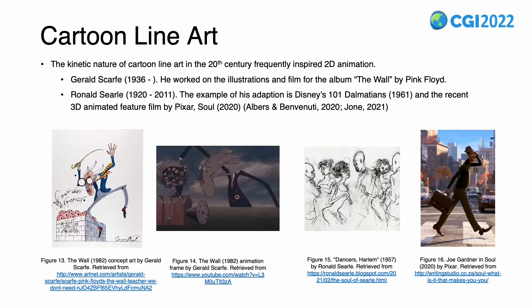The kinetic nature of cartoon line art in the 20th century has inspired many 2D animations. Two examples are Gerald Scarfe and Ronald Searle. Scarfe was involved in the production of 2D animation for Pink Floyd's album The Wall; his style is very aggressive, involving lots of twisted shapes and exaggerated large contours. Searle also influenced many 2D animations, including Disney's 101 Dalmatians, and his style was recently exploited in Pixar's 3D animation Soul. His style focused on satirical expression and the squiggliness of the lines.